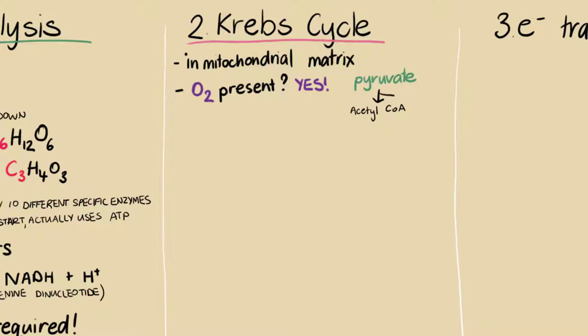In this phase, some carbon dioxide is also produced. The Krebs cycle is another eight steps of conversions by eight different specific enzymes.